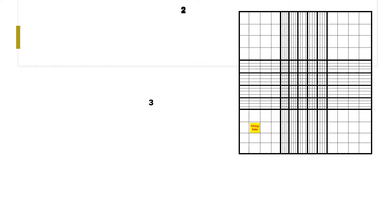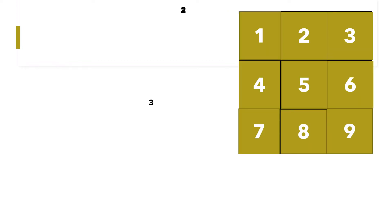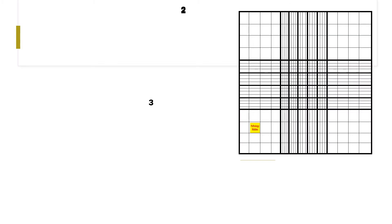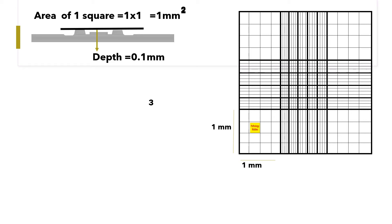This is one side of the Neubauer chamber. Since the Neubauer chamber side is 3×3 and has nine squares, each square has an area of 1×1, that is 1 mm². The depth of the chamber is 0.1 mm, so the volume of one square will be area multiplied by depth: 1 × 0.1 = 0.1 mm³.